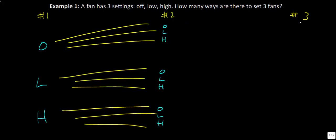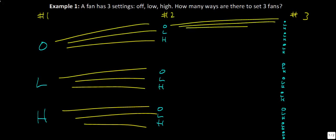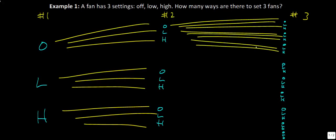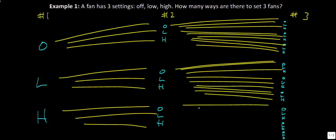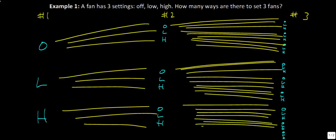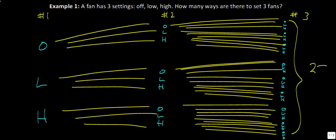Now if we add the third fan, each one of those branches maps on to another three settings. This gets kind of messy, but each letter maps on to three different ones. You'll notice we have nine here and nine here, and nine for the last group as well. So if you count up all the branches, you will see that we have 27 different outcomes.